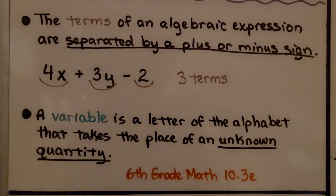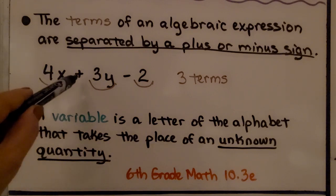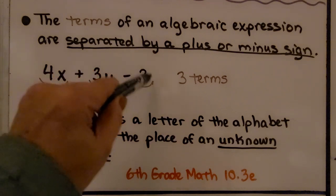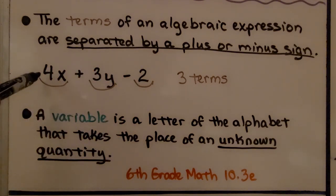So this is going to be a real quick review for those of you who need it. The terms of an algebraic expression are separated by a plus or minus sign. That means we have one, two, three terms in this algebraic expression.